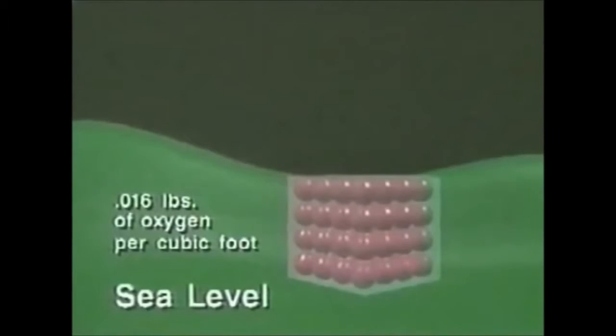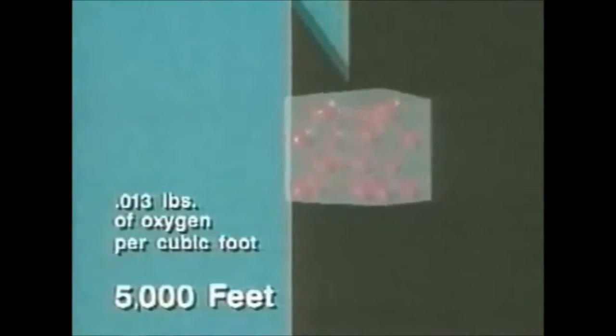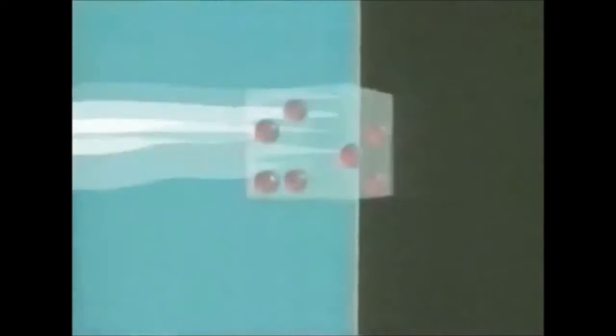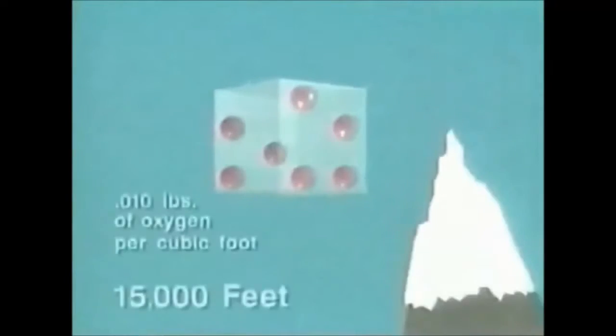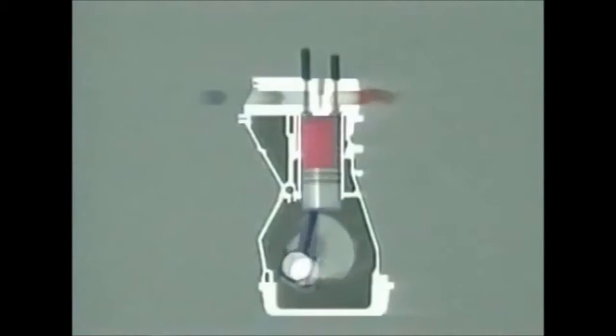At sea level there are 0.016 pounds of oxygen per cubic foot. At higher altitudes, the air is thinner, so there is less oxygen available. For example, at 5,000 feet there are 0.013 pounds per cubic foot, and at 15,000 feet there are only 0.01 pounds of oxygen per cubic foot. As altitude increases, it becomes more difficult for an engine to obtain the mass of oxygen it needs.